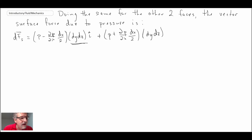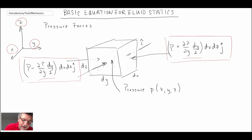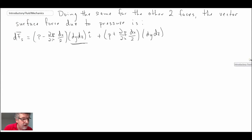Going back to our cube of fluid — x is positive in this direction, so the back face is here and the front face is here. The unit vector in the x direction is i, but on the opposing face the unit vector is in the minus i direction, and we need to carry that through when we do our expansion. We apply minus i for that unit vector, and we do the same for the other surfaces as well.